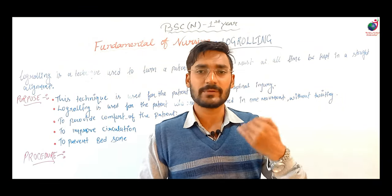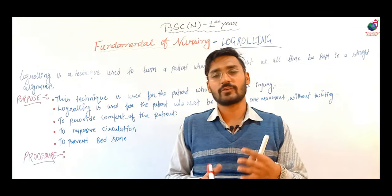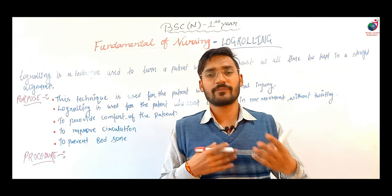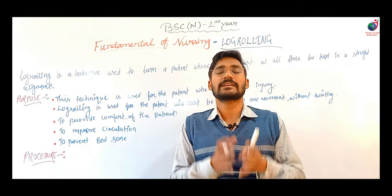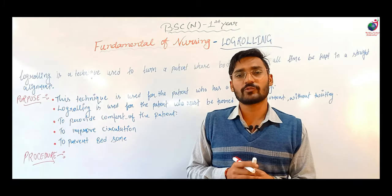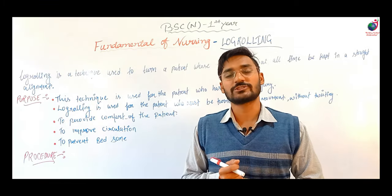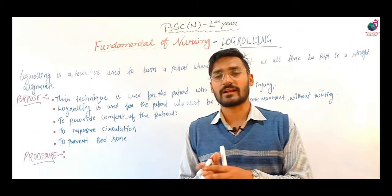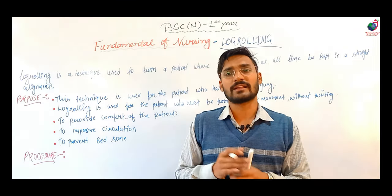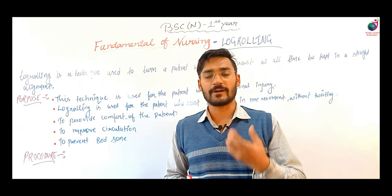We have to roll the patient so that the body rotates as a whole unit. Because we use three people, the timing of all three must be the same. With the count of three, we rotate the patient without bending the body. We rotate from side to side — left to right, right to left — three to four times, to improve circulation and provide comfort to the patient.